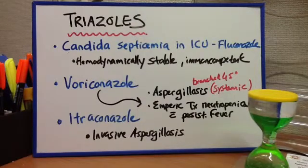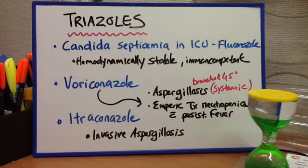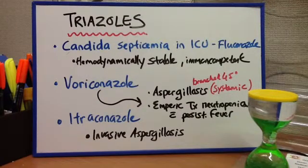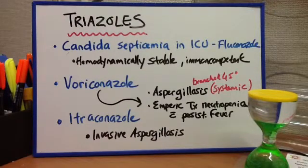Aspergillosis, from microbiology, is a systemic fungal disease with branched hyphae at 45 degrees. Itraconazole would be used for invasive aspergillosis.